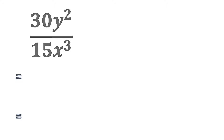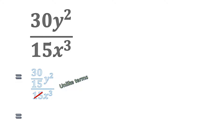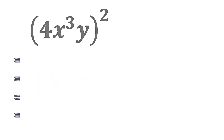Our next example: 50y squared divided by 15x cubed. We can divide 50 by 15 to simplify the coefficients, but here we see that the bases y and x are not the same — they are unlike terms, meaning we cannot subtract the powers from each other. Simplified, we only get 2y squared over x cubed. This is a common mistake students make, so please be attentive to the fact that the bases are not the same.